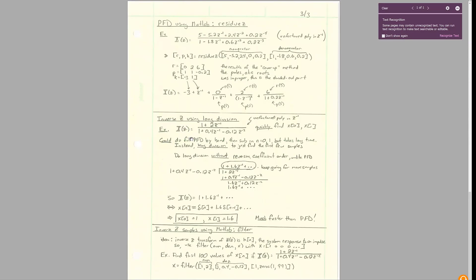You're going to use plain old long division. If x of z is equal to this ratio, you can find the first few values or as many values as you want to, just simply by dividing the two. And this is the way you'll do it if you want to quickly find your time domain x of naught or x of one. So just do long division without reversing the coefficient order, unlike partial fraction decomposition.